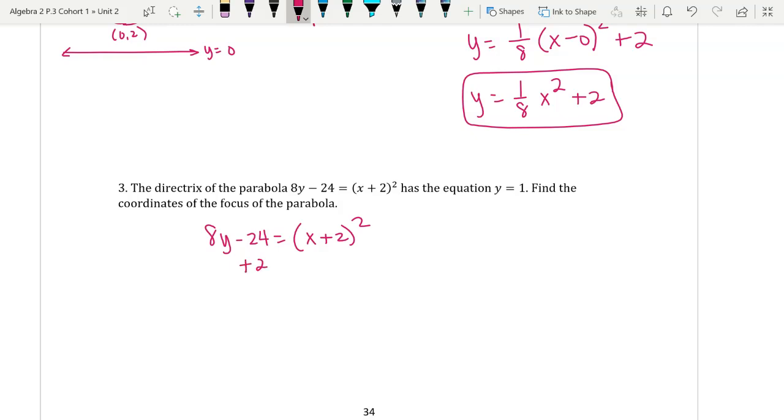So I'm going to add 24 to both sides. And then I'm going to divide everything by eight, so I make it y equals. That's going to give me the equation y equals, I'll put the one-eighth in front, 1/8(x + 2)² + 3. So this is really one divided by eight times (x + 2)² squared.